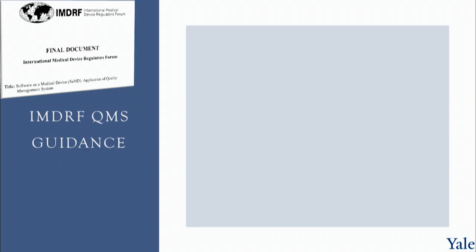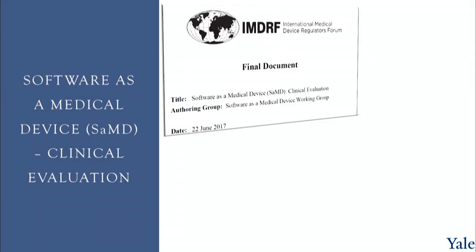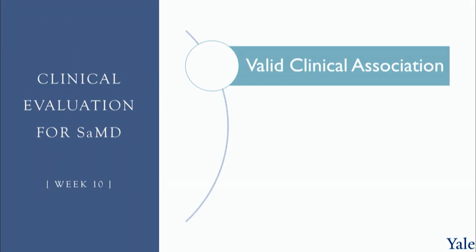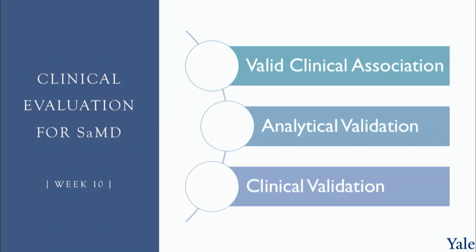A third IMDRF document, to be covered in more detail in week four, is the guidance on quality management systems, describing the characteristics for SaMD. The fourth document is on clinical evaluation, issued by the IMDRF in June 2017 and reissued by the FDA a few months later. It covers three components: valid clinical association — is the software output relevant to the disease; analytical validation — is the output accurate; and clinical validation — is it helpful, and can it improve patient outcomes.